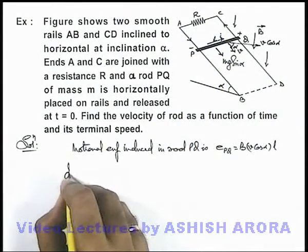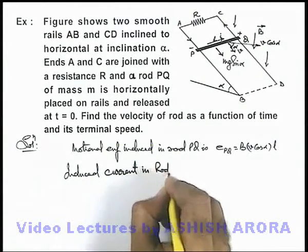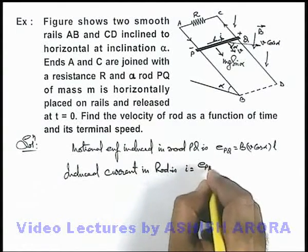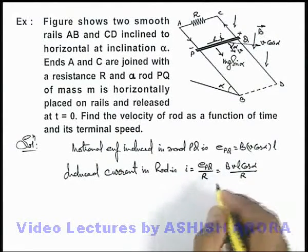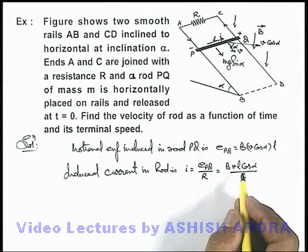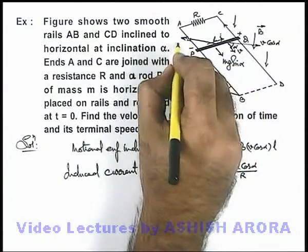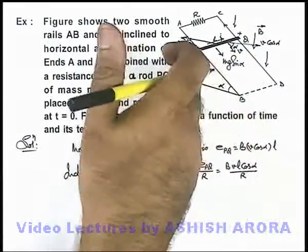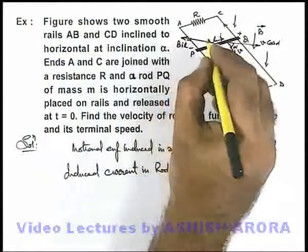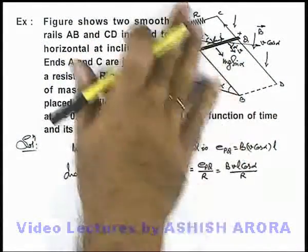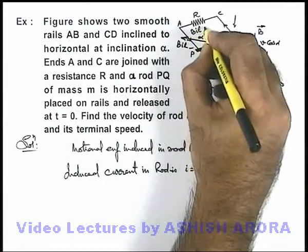The induced current in the rod is i = EMF divided by resistance, which gives i = BvL·cos(α) / R. Due to this current, the rod PQ will experience a magnetic force in the horizontally left direction, which is BiL. By the right-hand palm rule, the field is downward and current is in the inward direction, so the force is horizontally toward the left at angle alpha with the inclined plane.